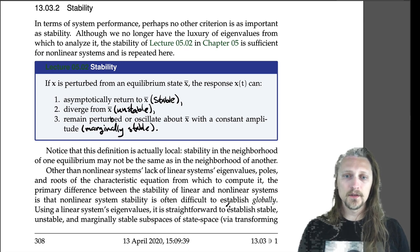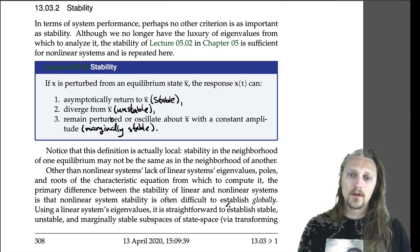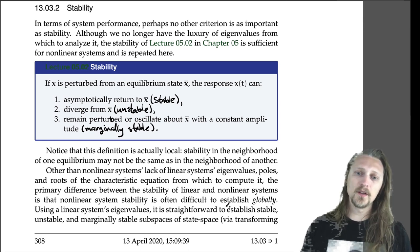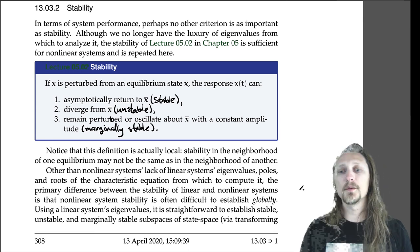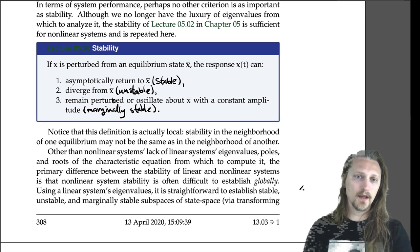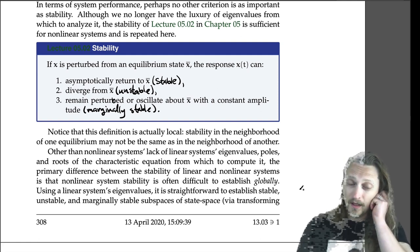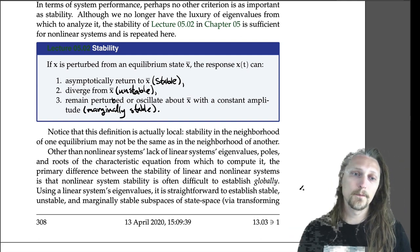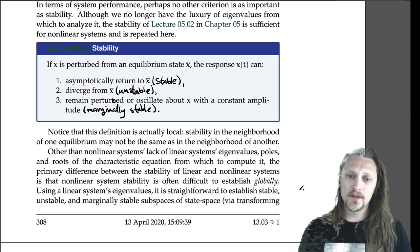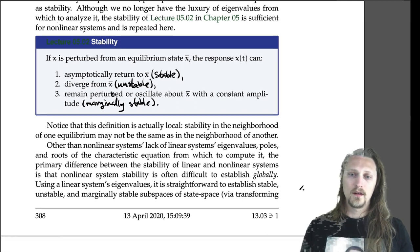Other than the lack of eigenvalues, poles, and roots of the characteristic equation from which to compute stability, the primary difference between the stability of linear and nonlinear systems is that nonlinear system stability is often difficult to establish globally. We can look at an equilibrium and say it is stable in its neighborhood, however saying anything about the entire system is more difficult.